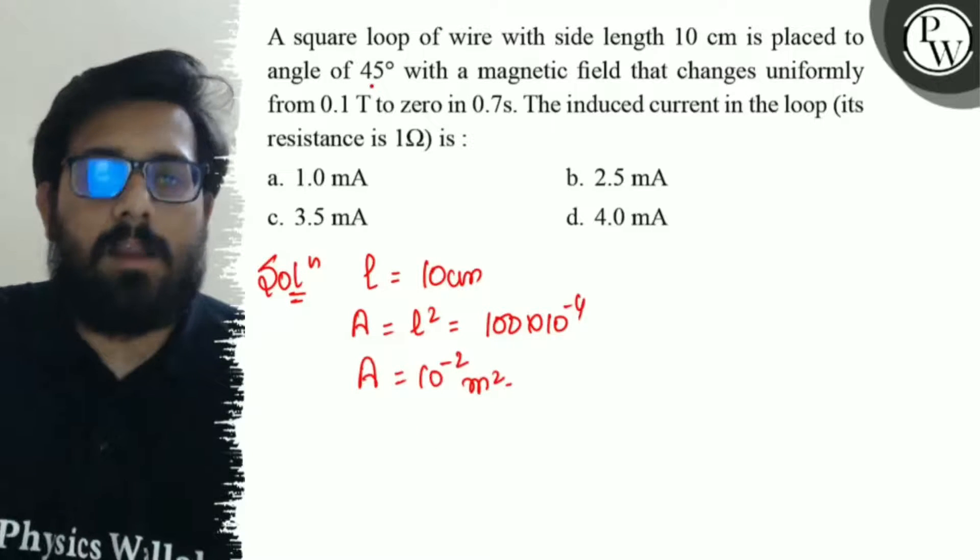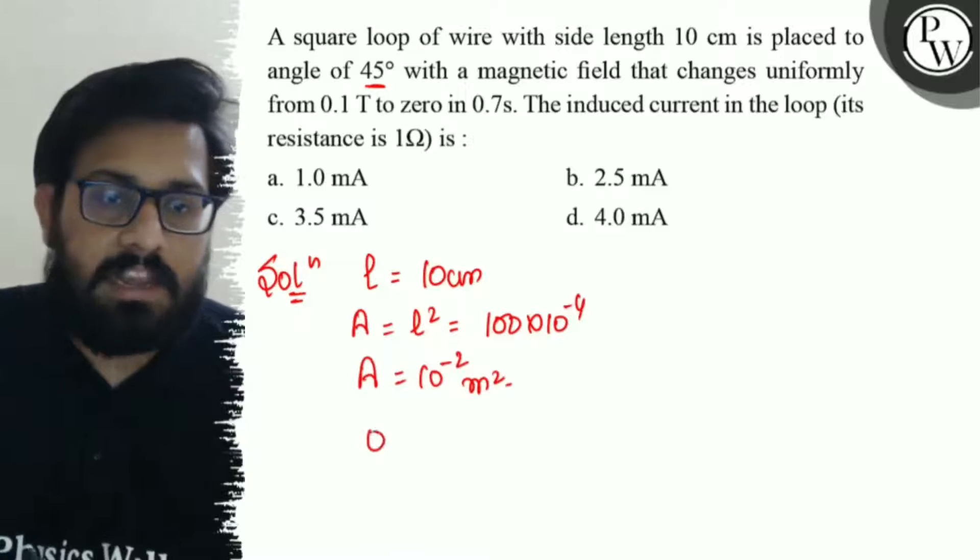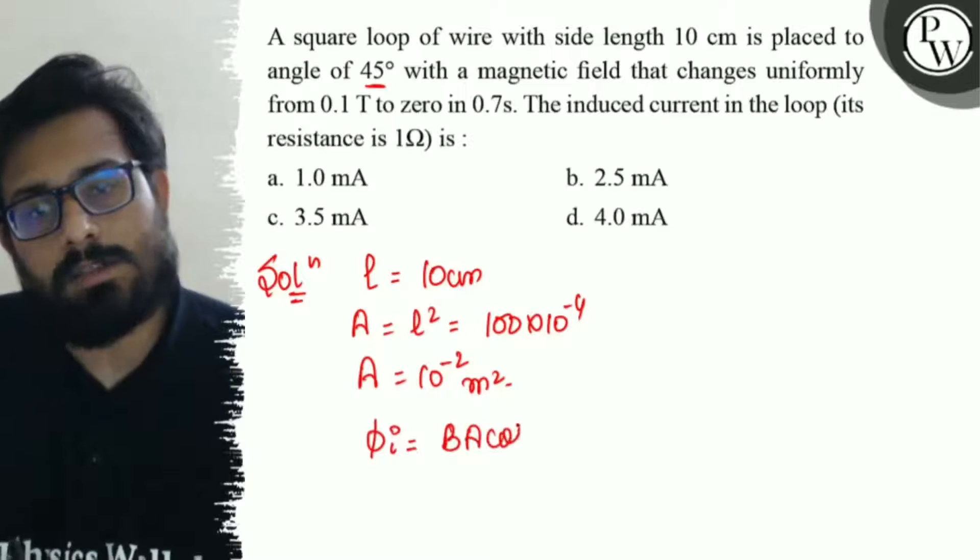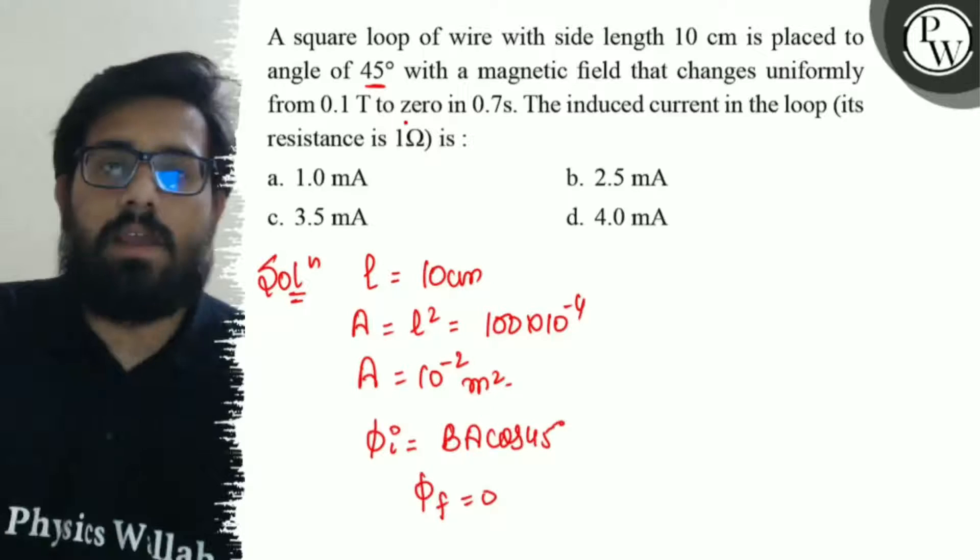The angle between the magnetic field and area vector is given as 45 degrees. So your initial flux can be written as B A cos 45 degrees. Your final flux comes out to be zero, because the final field is zero.